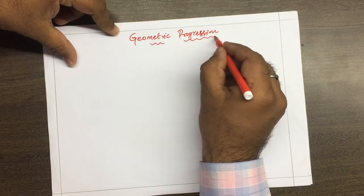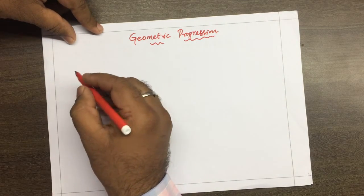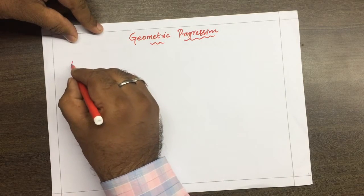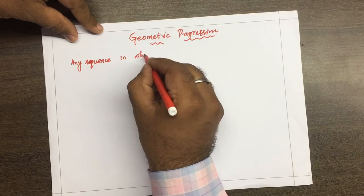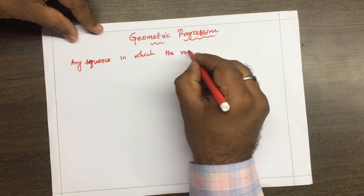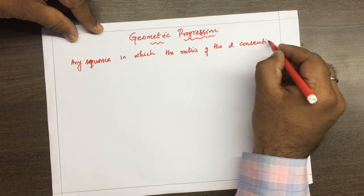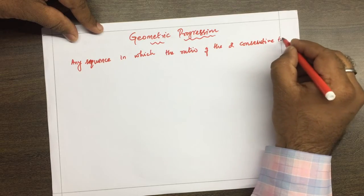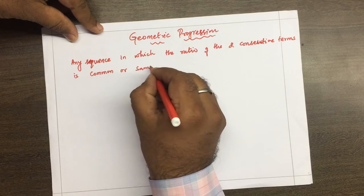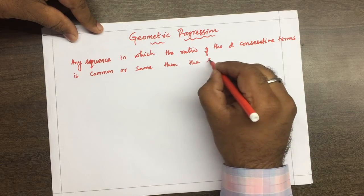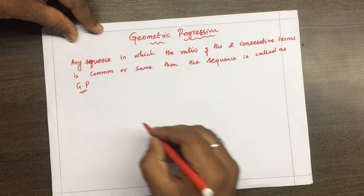Let me first tell you what is geometric progression. Any sequence in which the ratio of two consecutive terms is common or the same is called geometric progression, or GP in short form.